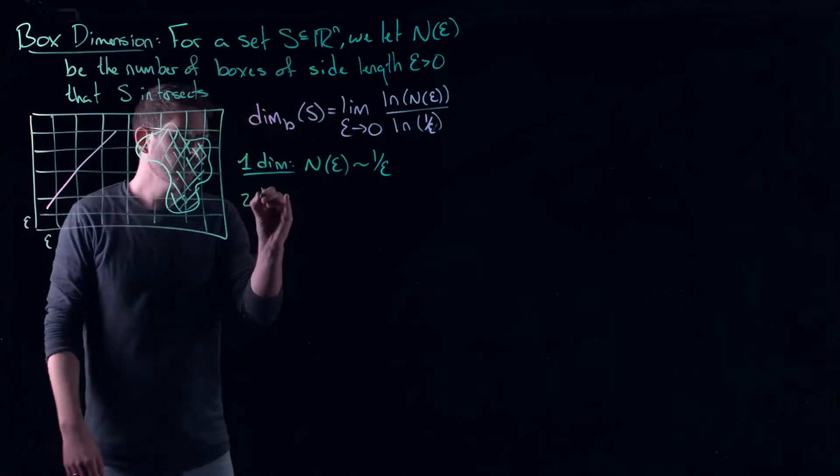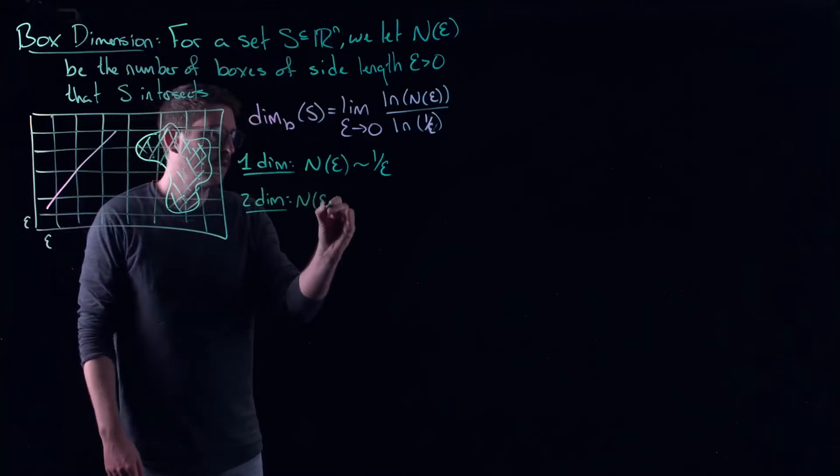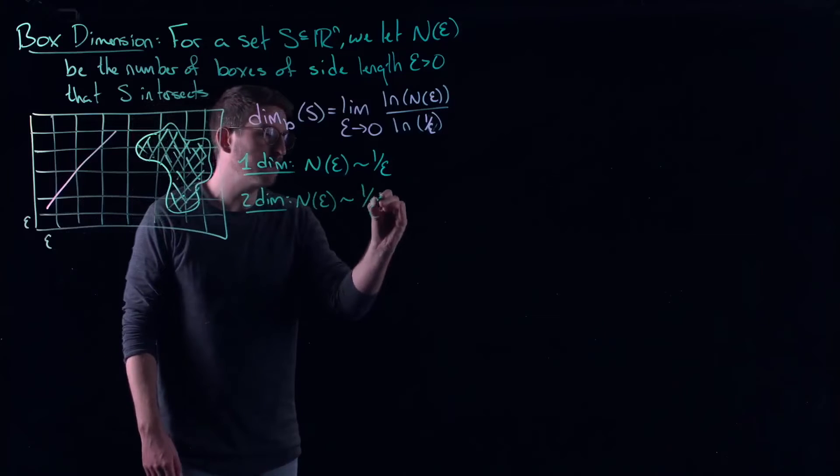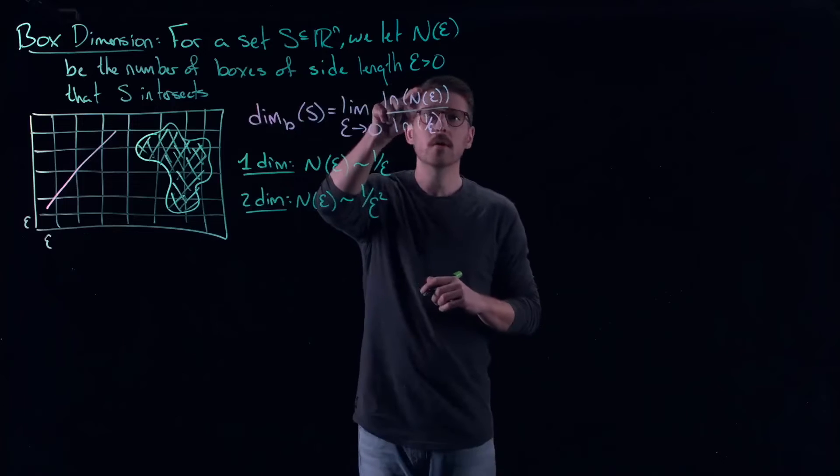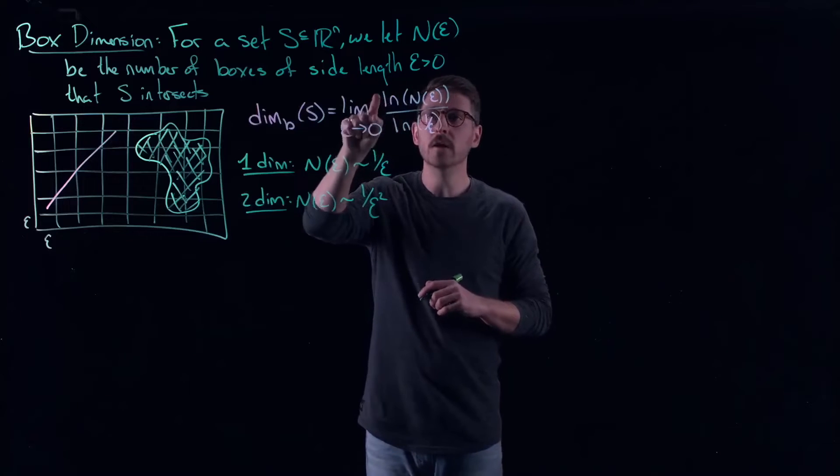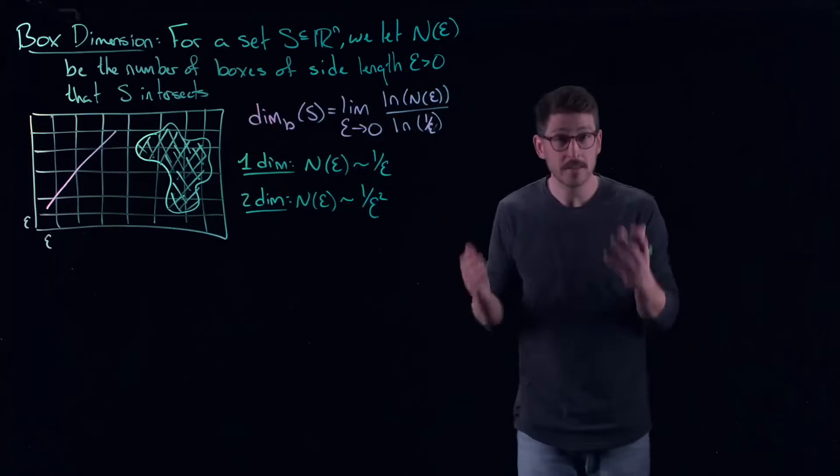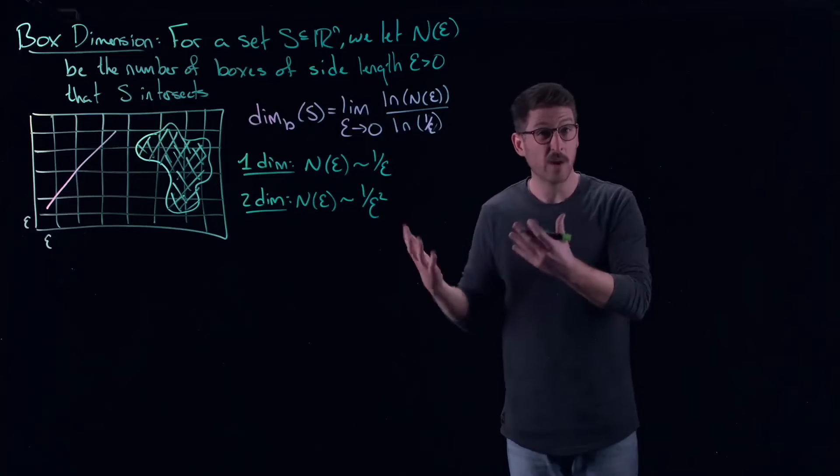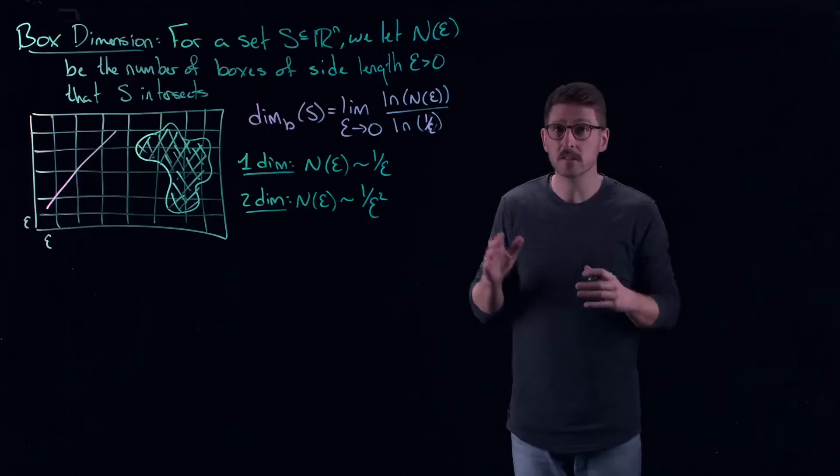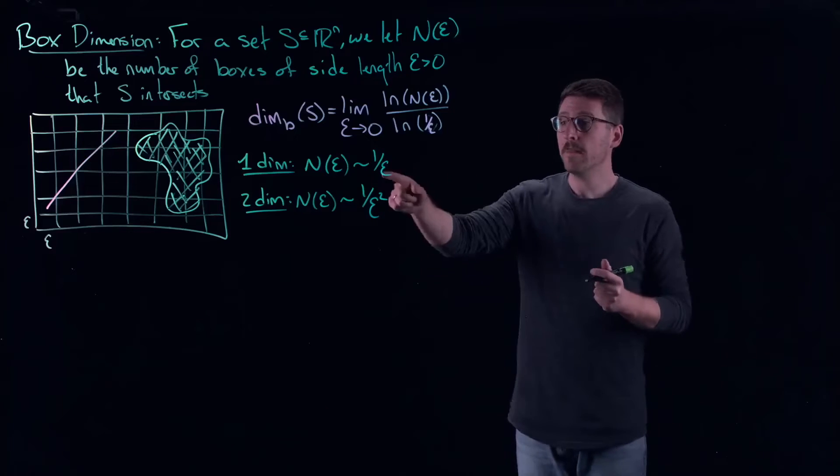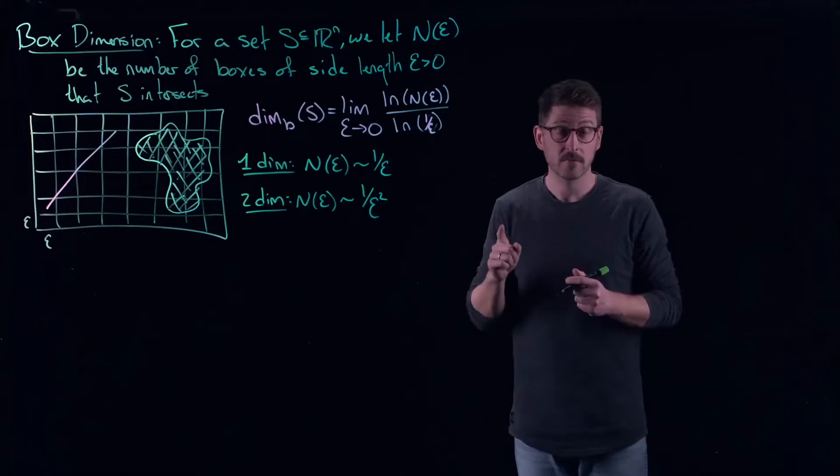Similarly, for a two dimensional object, this thing should scale like one over ε squared. So again, one over ε squared, the square comes out, you get a two in here for a two dimensional object. And in general, for standard objects, squares, cubes, hypercubes, all of these kind of standard objects that we're all used to, their box counting dimension lines up with the dimension that you understand that they have.